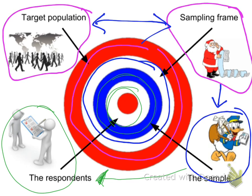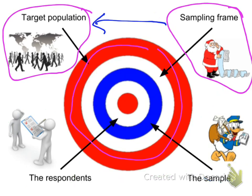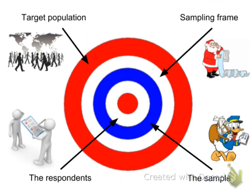So you can see how we start with this great big target population of who we would like to gather information from. That's who we're aiming for.